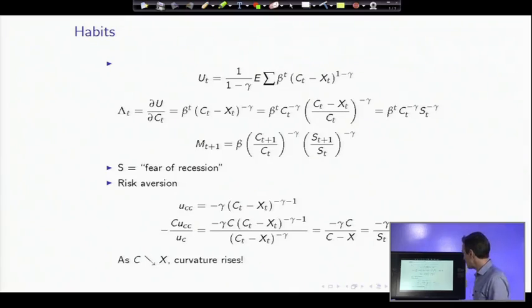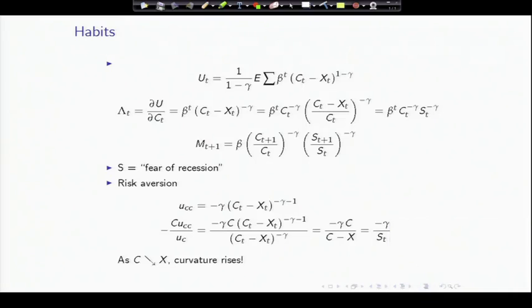Now the equations. The utility function is just as before, except instead of c to the one minus gamma, we have (c minus x) to the one minus gamma. So we've added the habit in there. That's the reference level for the utility function.